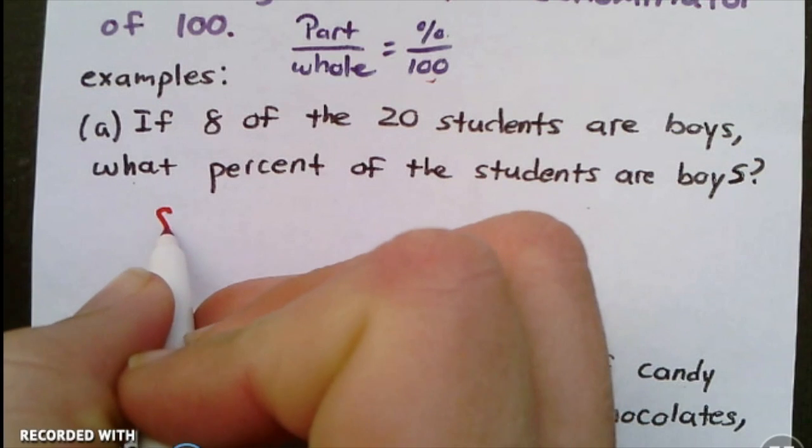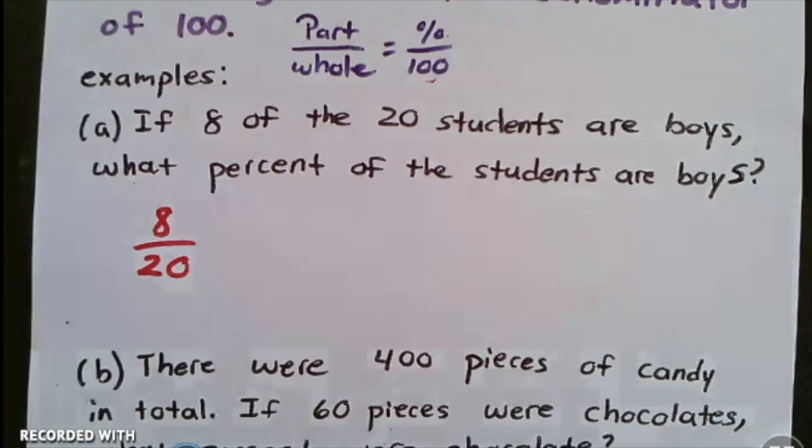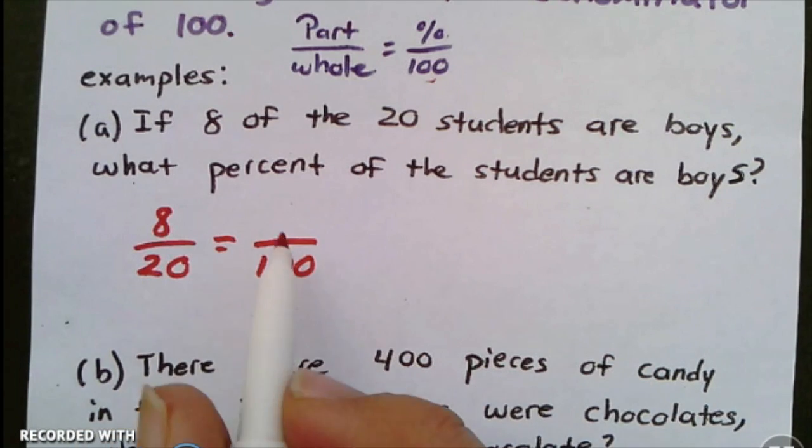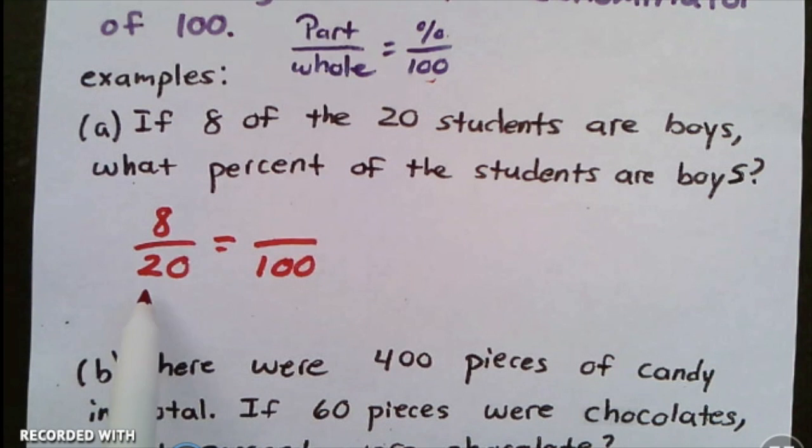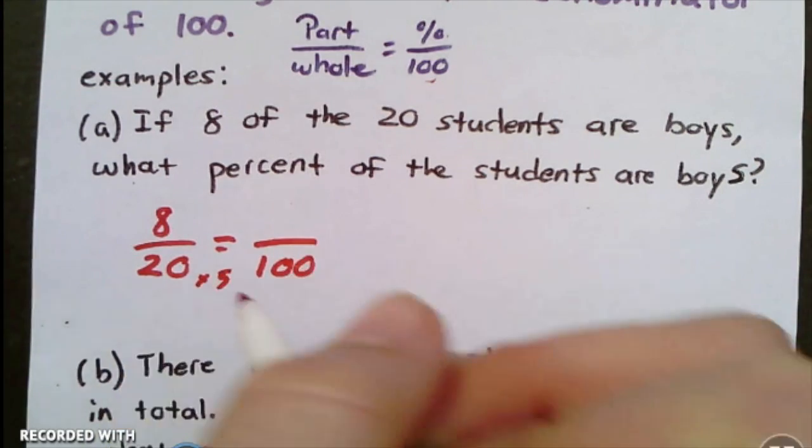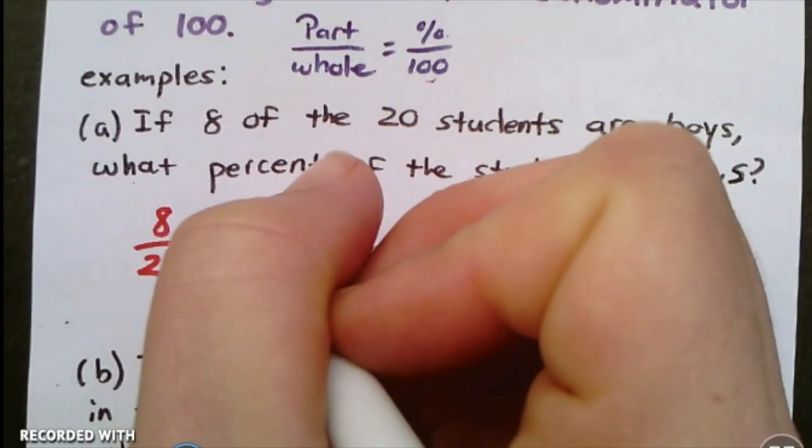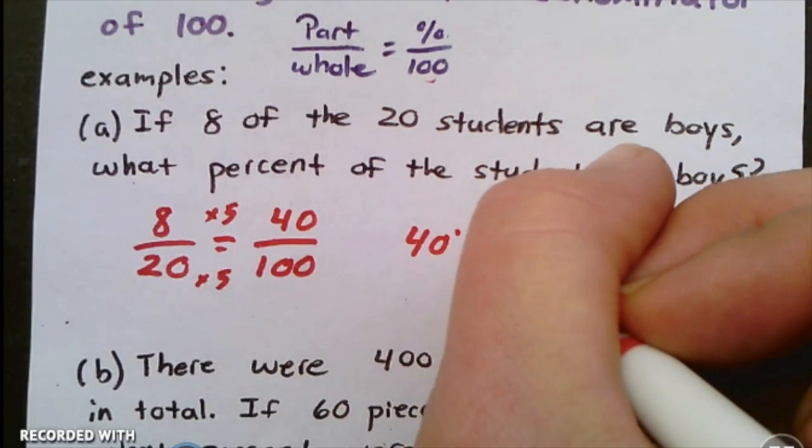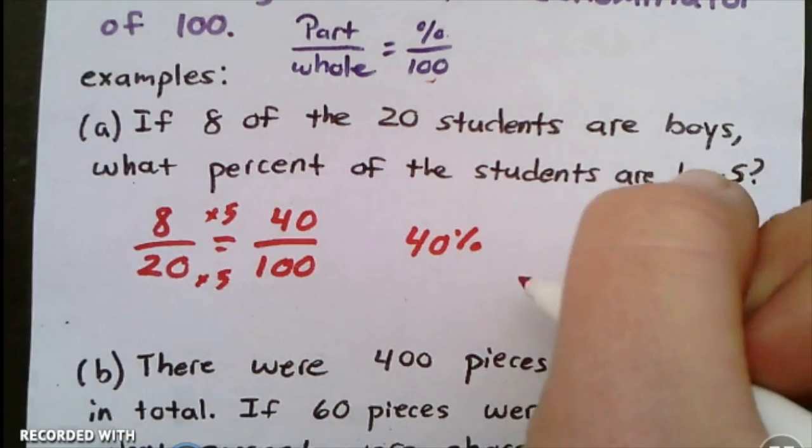I'm going to start by writing this as a ratio: 8 out of 20 are boys. So we want to know how many out of a hundred would be boys. If the denominator is easy to just multiply by something to get to a hundred, we can do this like equivalent fractions. Twenty times what is a hundred? Twenty times five. So then eight times five is forty. That means it's 40 percent of the students are boys.